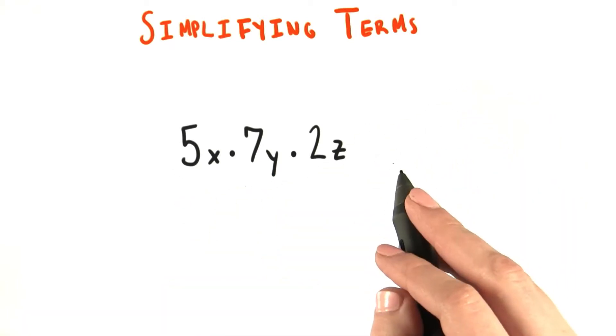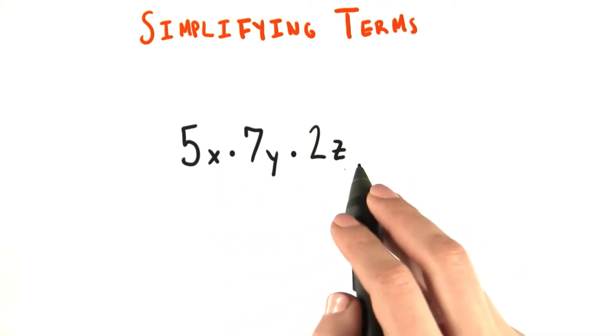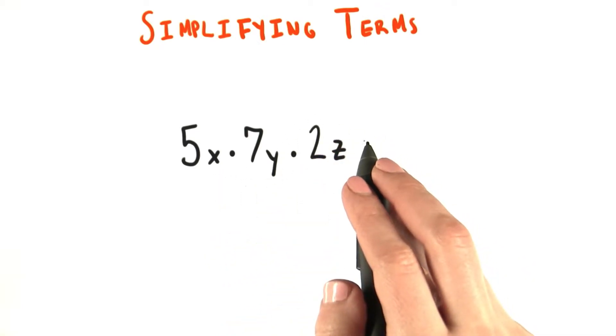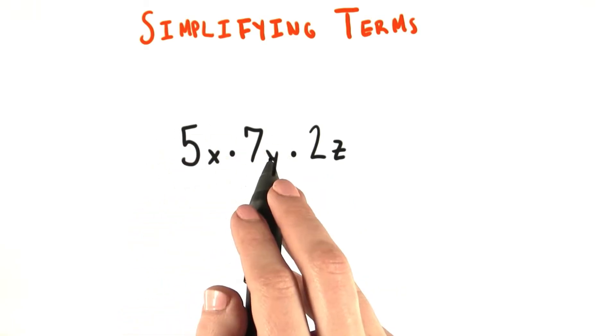Now, what I really want in this case is for all the variables to be on the back end of the term, and all of the numbers, or the constant factors, to be at the front of the term.